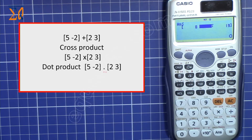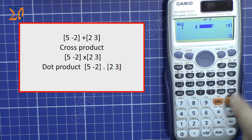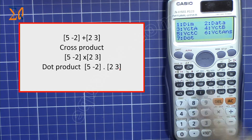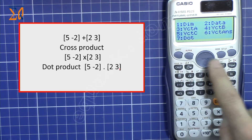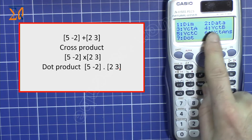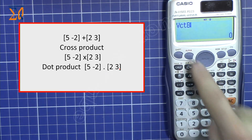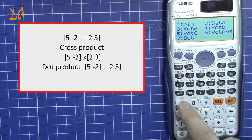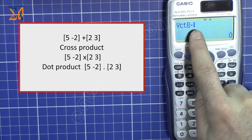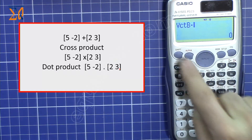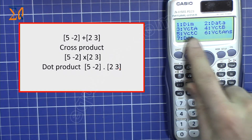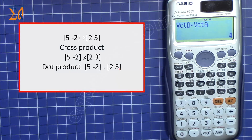For the dot product, press AC to clear, then Shift, vector, four for vector B. Then press Shift, five, and dot which is number seven — the dot operator appears. Now bring in vector A by pressing Shift, five, three. Press equal and the dot product result is the number four.